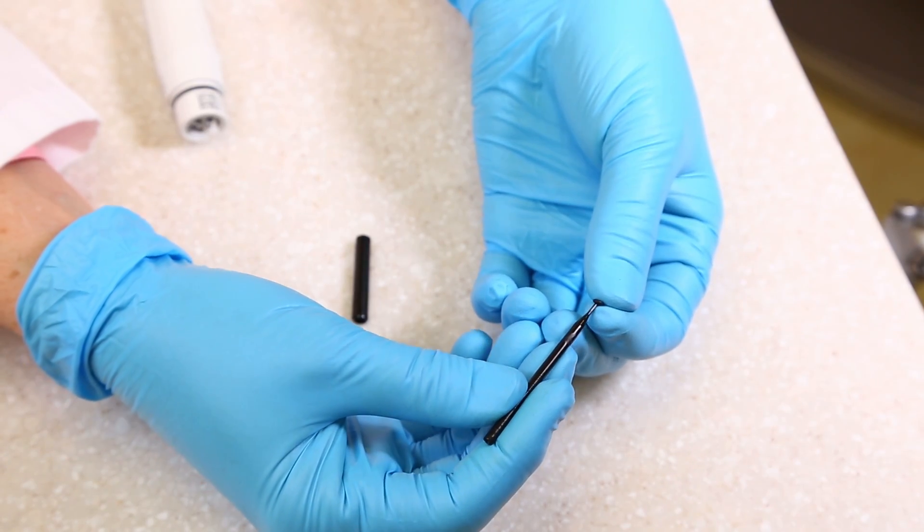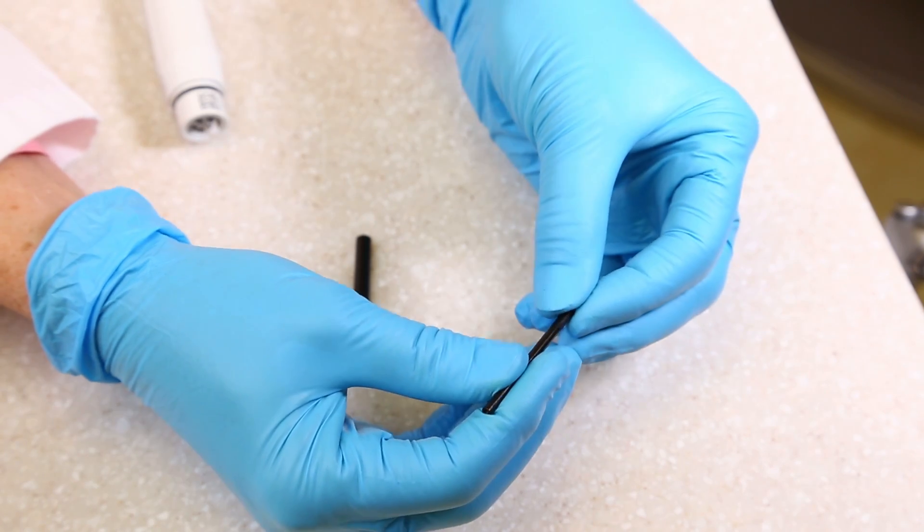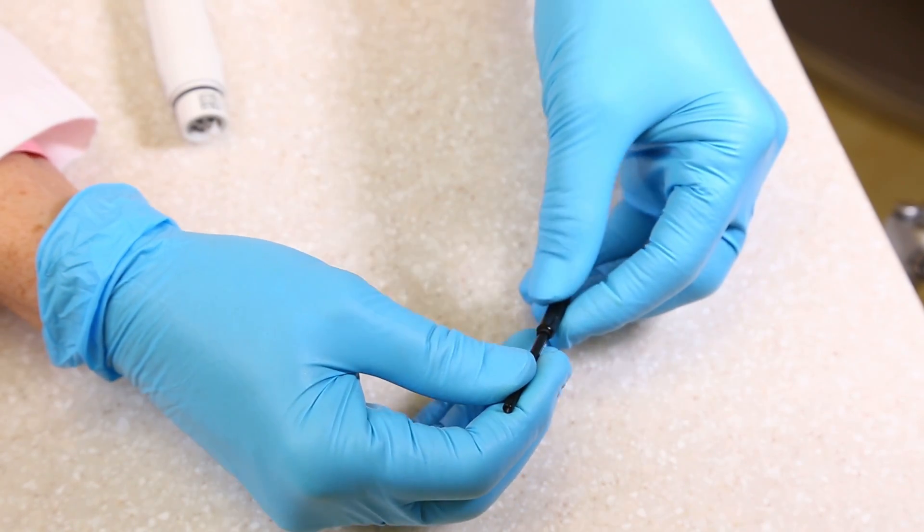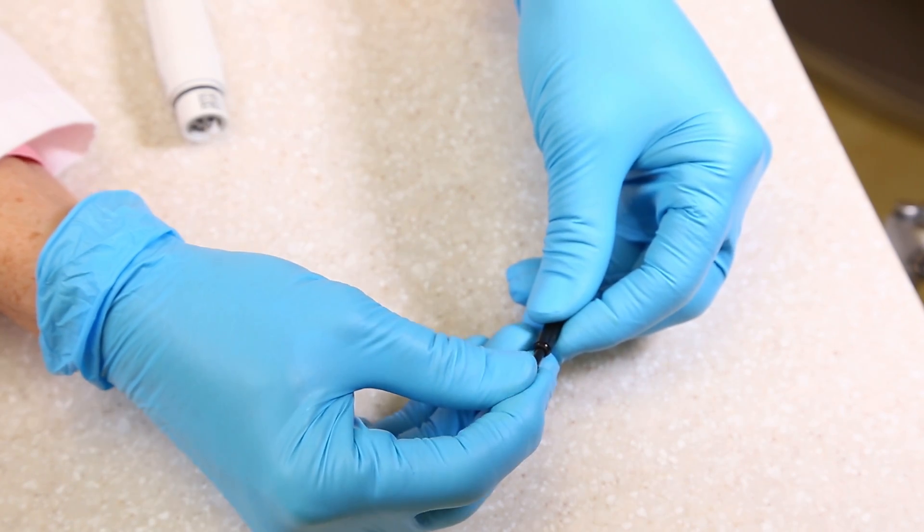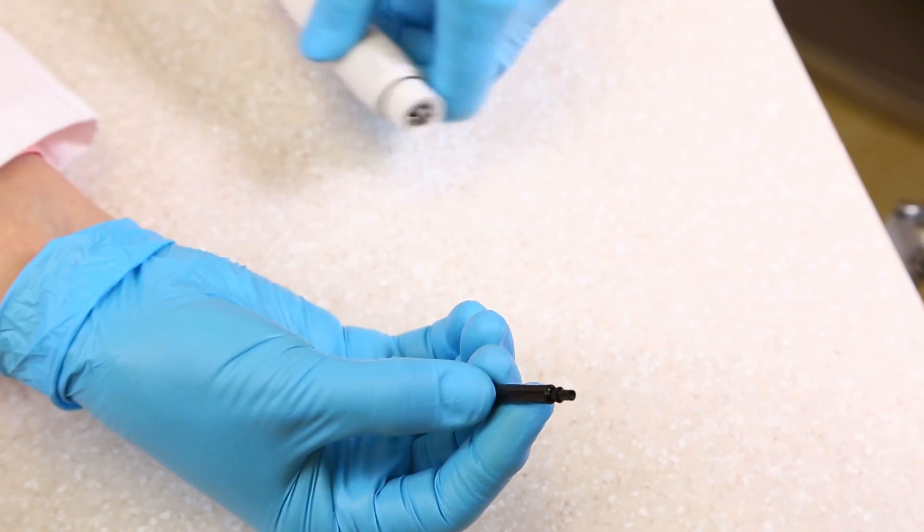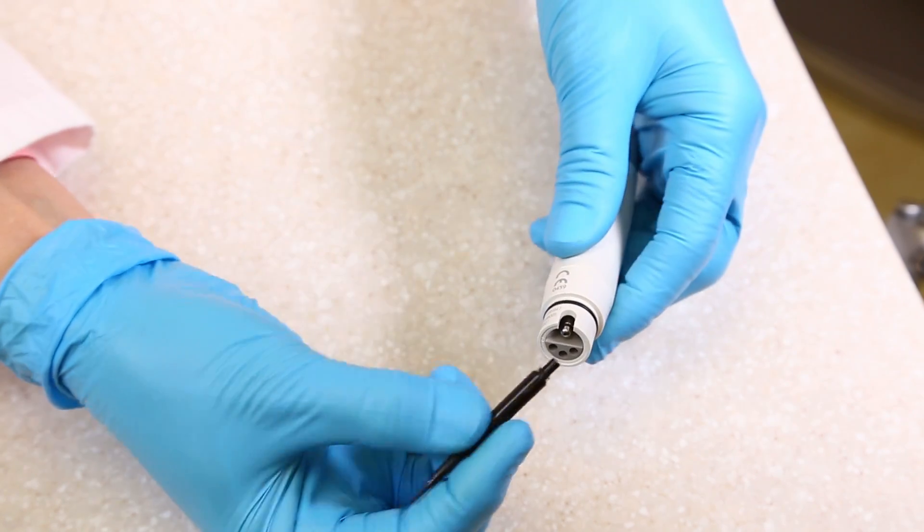Place a new o-ring on the pointed end of the thin plastic rod. Slide the o-ring to within 6 mm of the opposite end. A drop of oil may be helpful in sliding the o-ring. Slide the hollow tube over the thin rod from the pointed end to the o-ring.